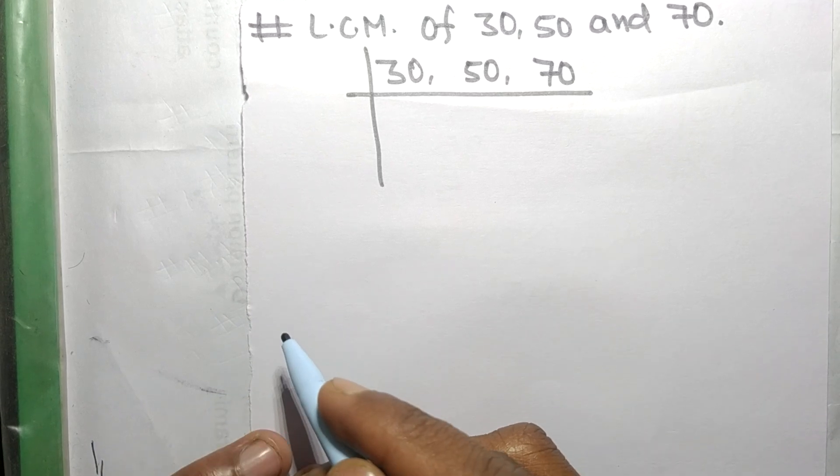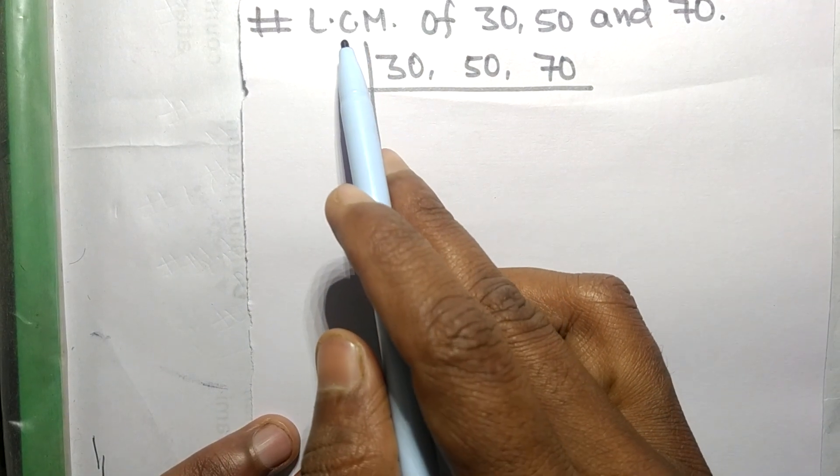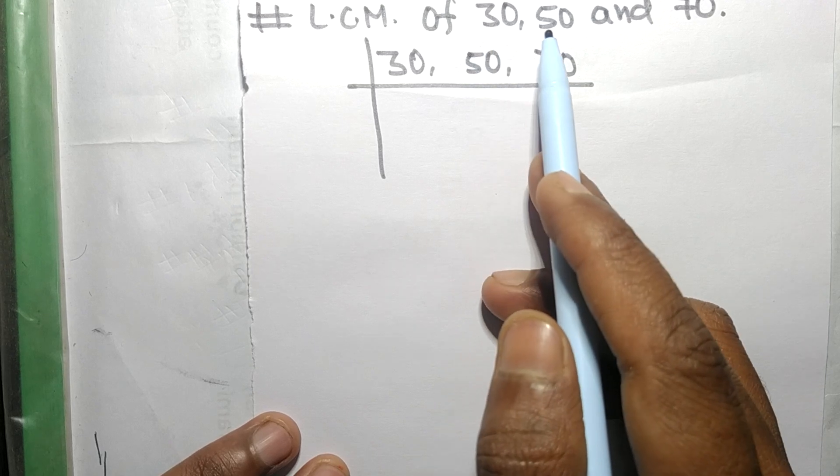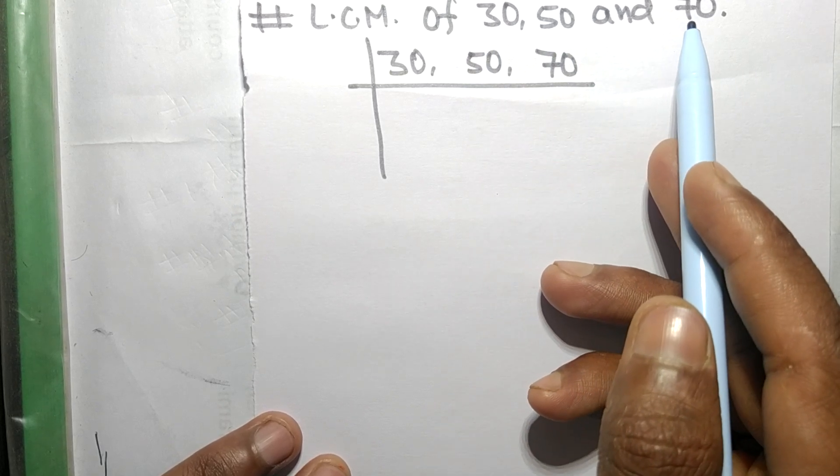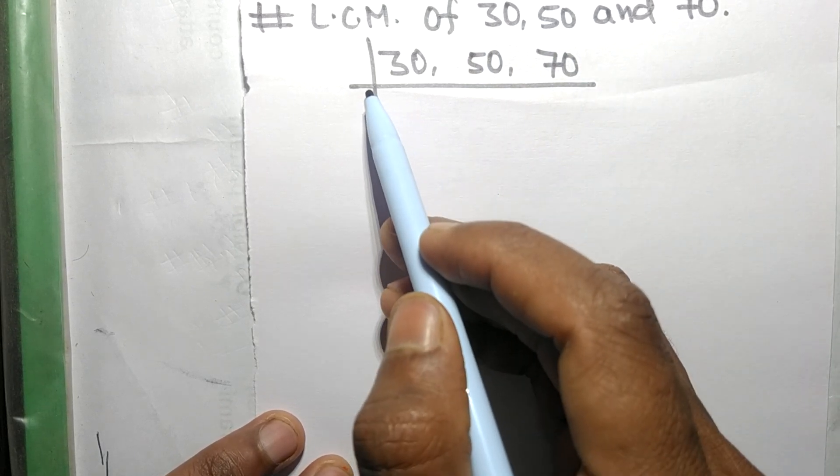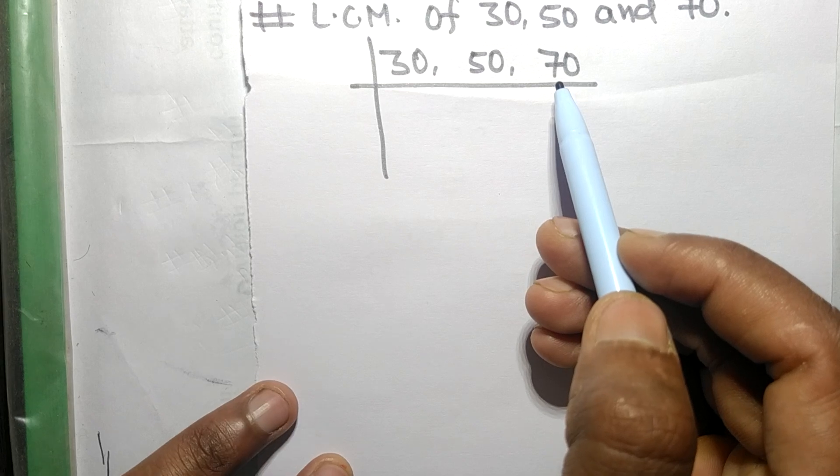Today in this video we shall find the LCM of 30, 50, and 70. These all numbers are exactly divisible by 2.